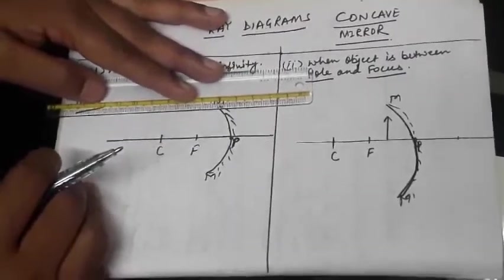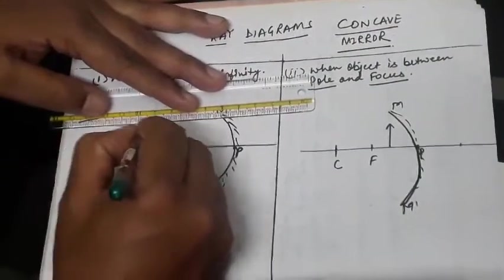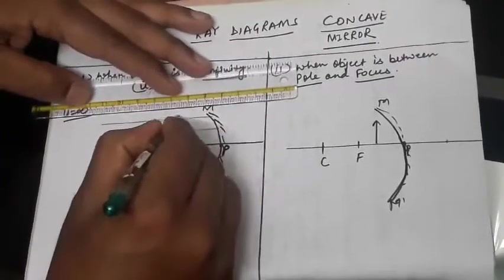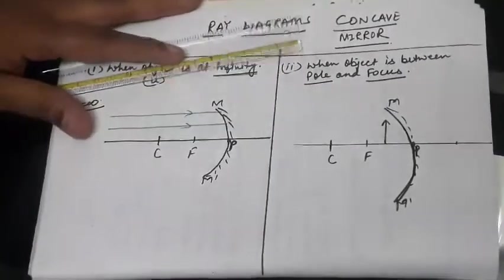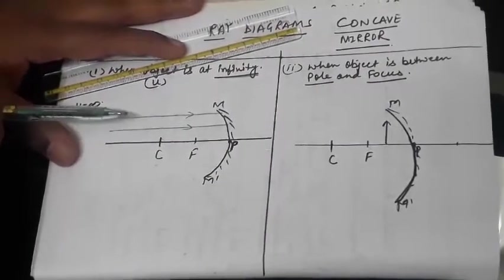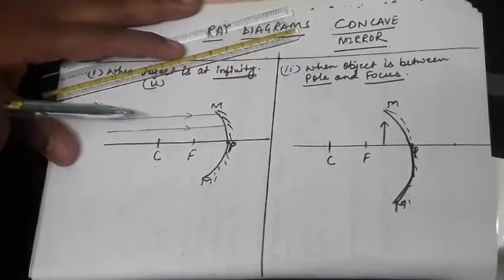Whenever an object is placed at infinity, the rays of light always come parallel to each other and parallel to principal axis. It is not always sure that the rays will be parallel to principal axis, but it will be sure that the lines will be parallel to each other. This is sure, but it is not always sure that it will be parallel with principal axis also.